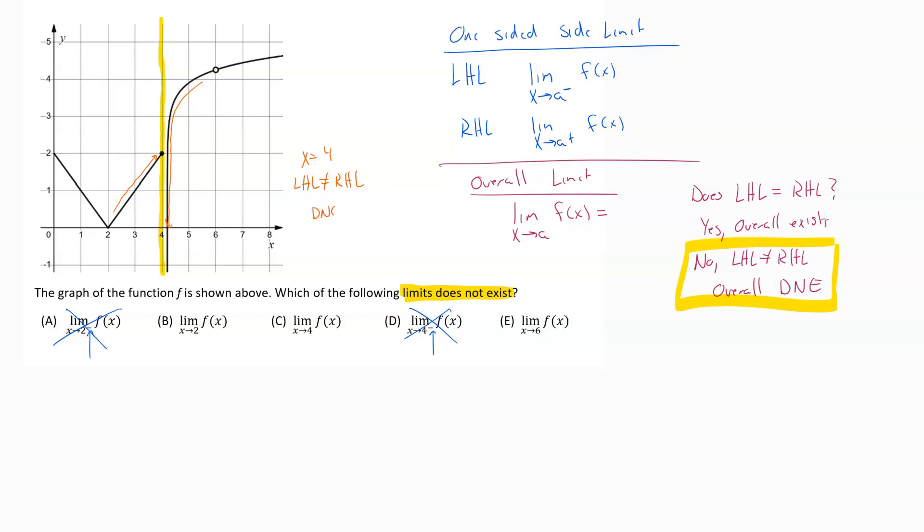And that would tell me that the overall limit DNE, does not exist. So the answer on this one would be limit as x approaches 4 of f of x. That limit does not exist.